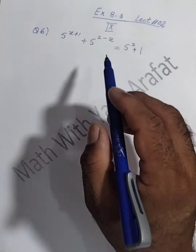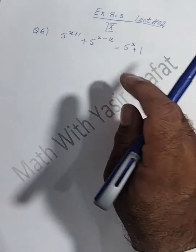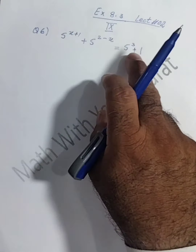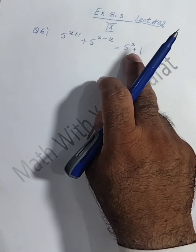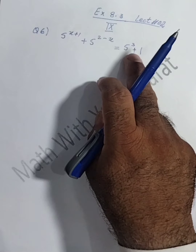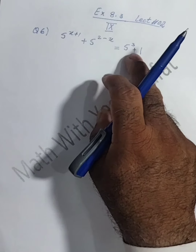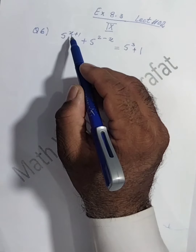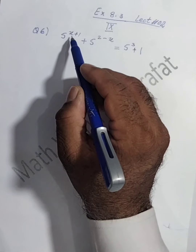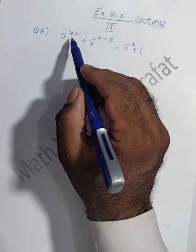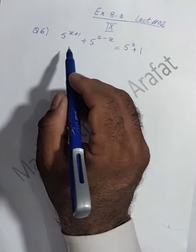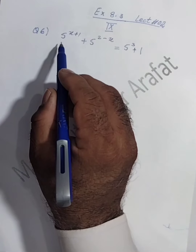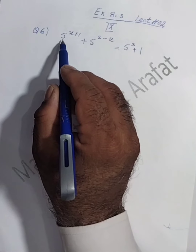What is the rule to find out the solution of this type of exponential equation? We have a very simple rule: first we have to separate x in single form with a positive sign. So let's start the question.